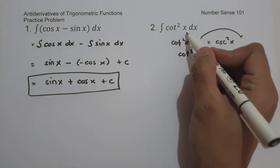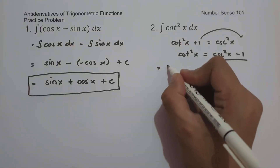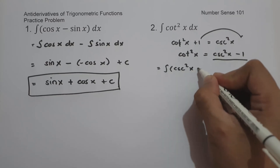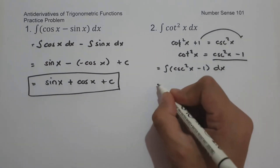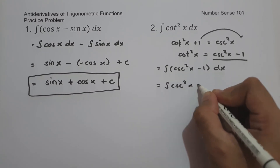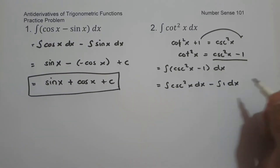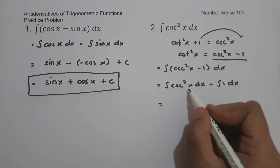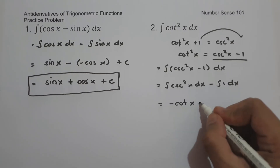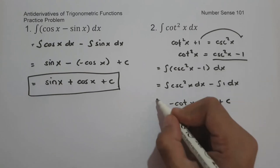Therefore, the value of cotangent square x is cosecant square x minus 1. So let us have the antiderivative of cosecant square x minus 1 dx, which gives us the antiderivative of cosecant square x dx minus the antiderivative of 1 dx. The antiderivative of cosecant square x dx is negative cotangent x, minus the antiderivative of 1, that is x, plus c. And this will be our answer.